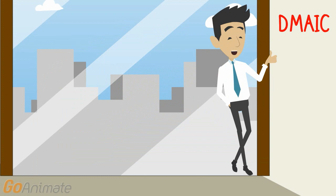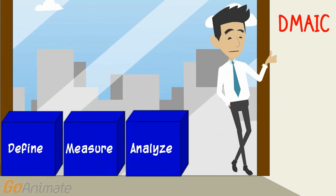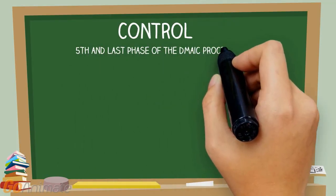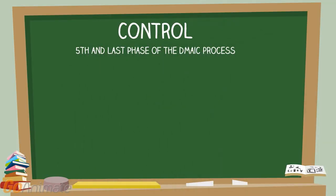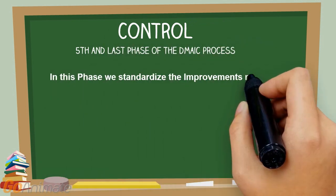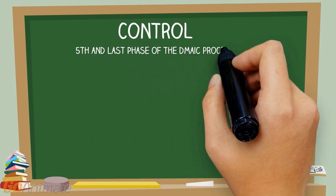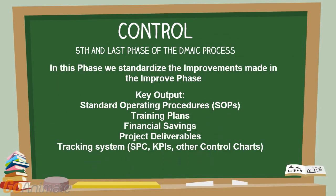DMAIC stands for Define, Measure, Analyze, Improve, and Control. Control is the fifth and last phase of the DMAIC process. In this phase we standardize the improvements made during the improve phase — key outputs include standard operating procedures, training plans, financial savings, project deliverables, and tracking systems such as SPC or KPIs to verify improvements made are sustained. The control phase is approximately two to three weeks in total duration.